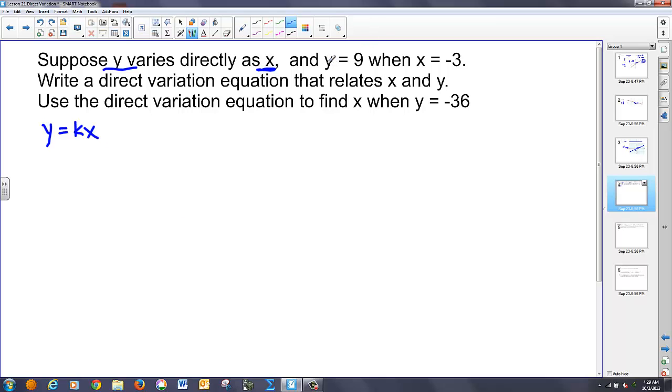So in this case, they give us a value of nine for y and three, or negative three for x. So I can actually fill that into this equation. Notice, I'm missing k. What this will enable me to do is actually find k. So if I were to solve this, I'd divide both sides by negative three, and I would get k equals negative three.